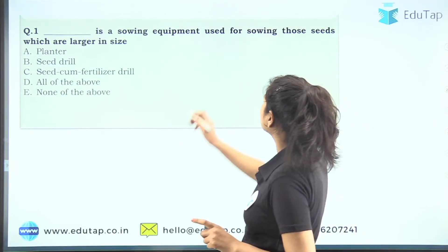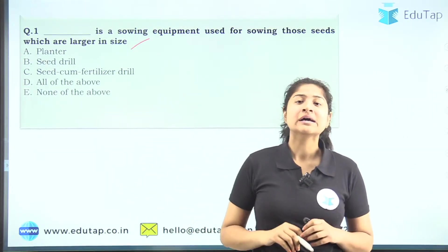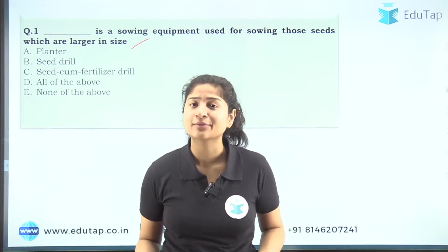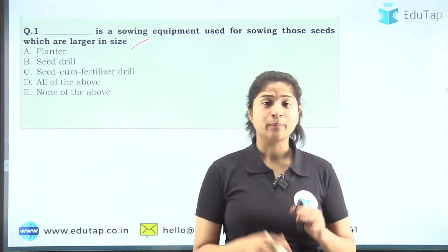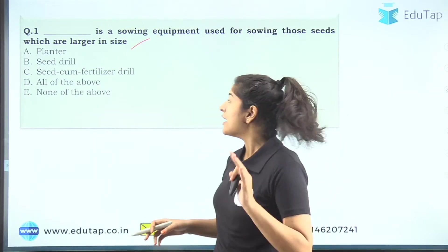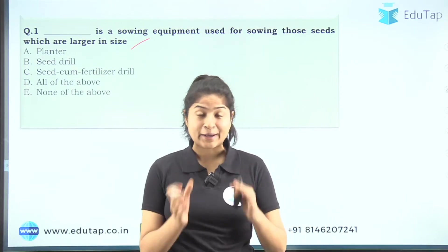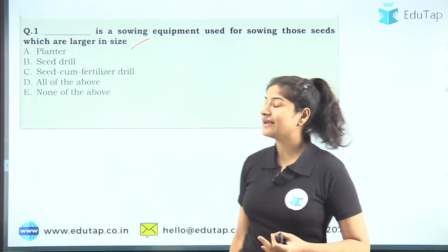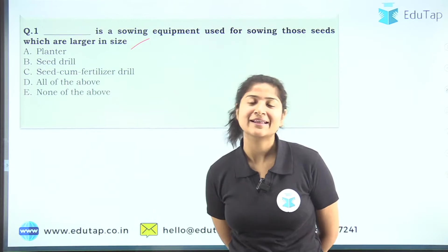The first question: Dash is a sowing equipment used for sowing seeds which are larger in size. In agriculture engineering, one or two questions are asked in the examination. Even if you are studying for NABARD or IBPS AFO, we are covering it because it is part of your syllabus. We will look at different terms and implements in agriculture engineering so you are familiar with the concepts — this is essentially a safe-side lecture.